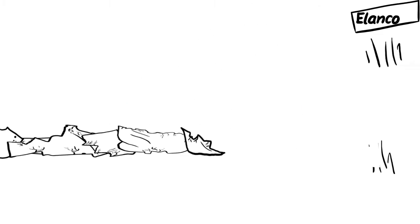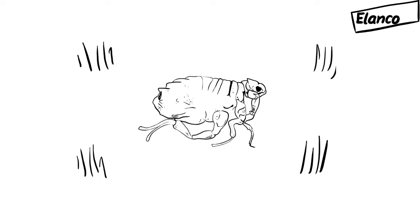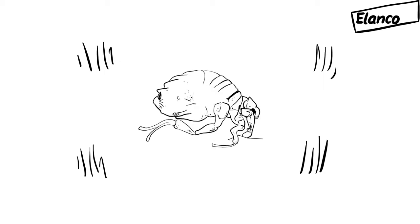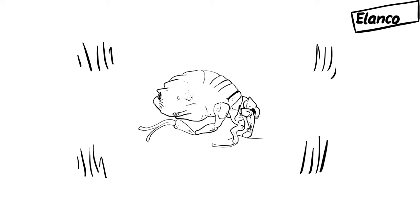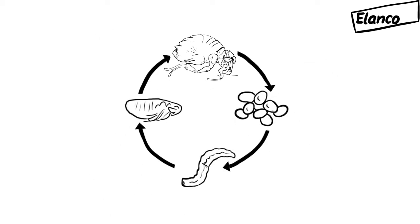After hatching from the pupa, adult fleas find a host. Fleas start biting almost immediately in order to take their first meal, blood. Fleas remain on their host for a constant source of food and for the female fleas to continue laying eggs.